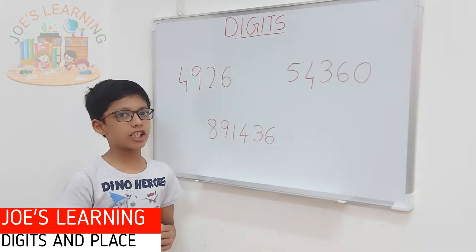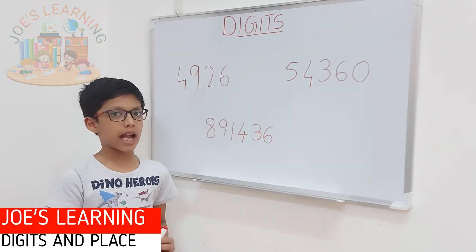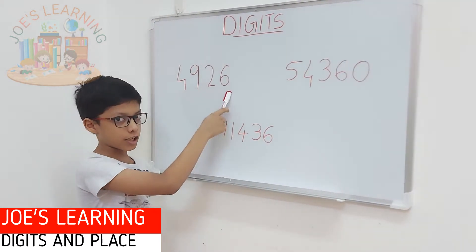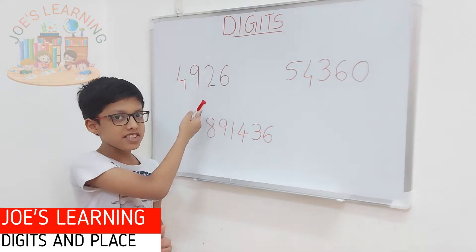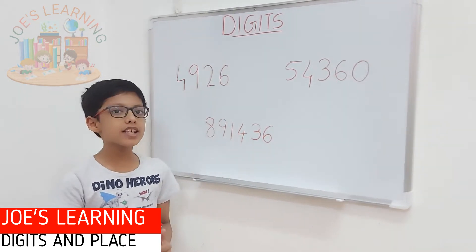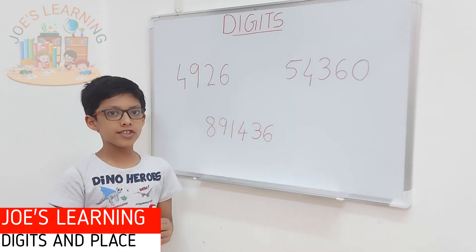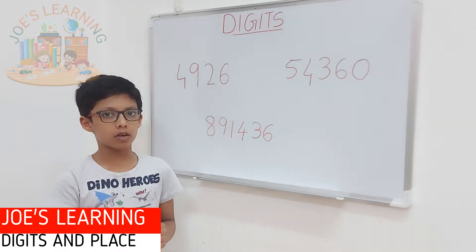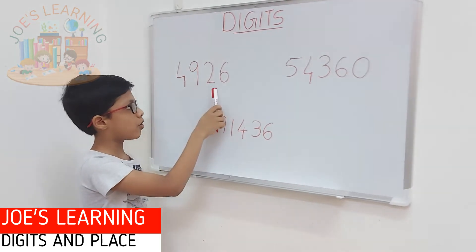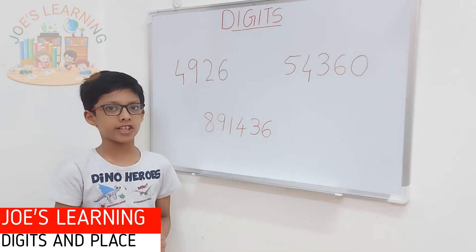Now let me make you understand with some examples. Let's take a look at my first example, that is 4926. What are the digits in this number? Just remember that digits are the symbols used to write the number. So the digits are 4, 9, 2, and 6, because these are the symbols used to write the number.